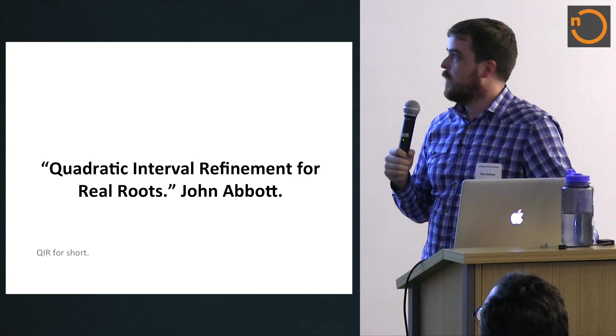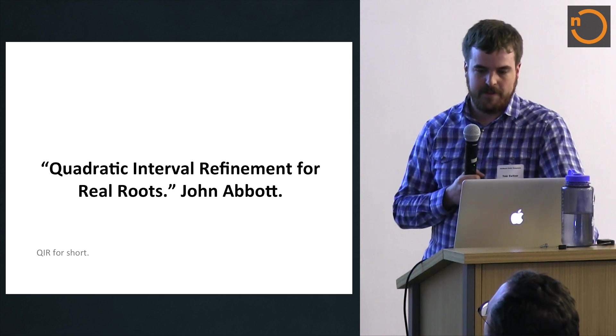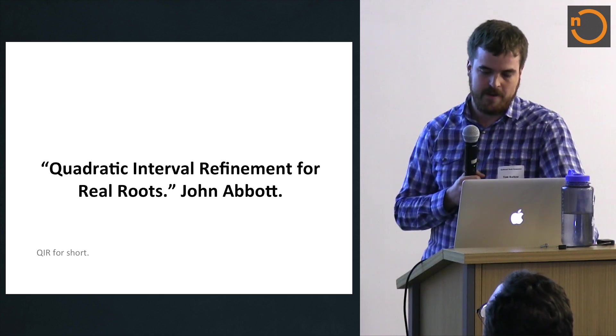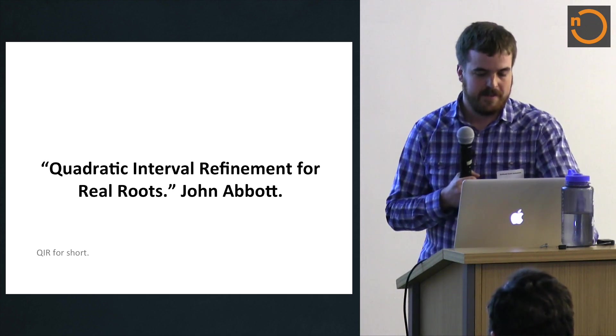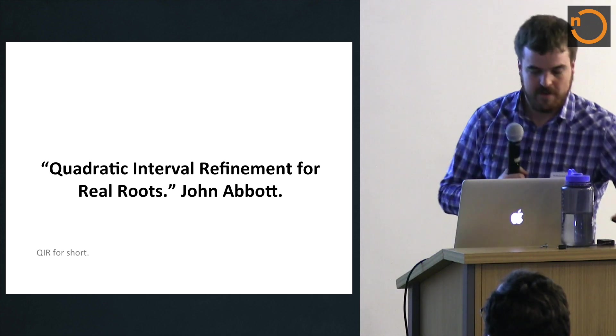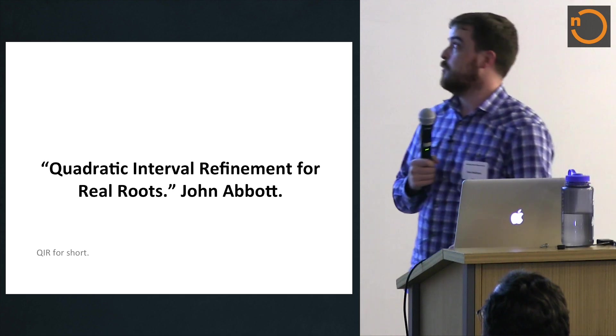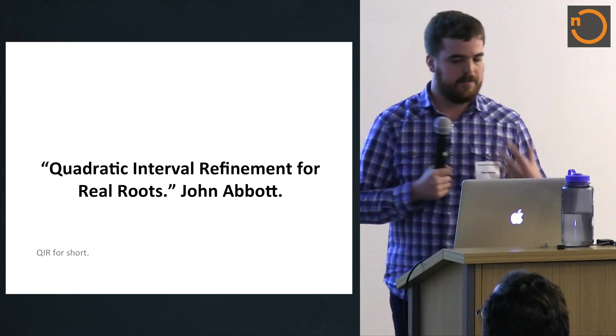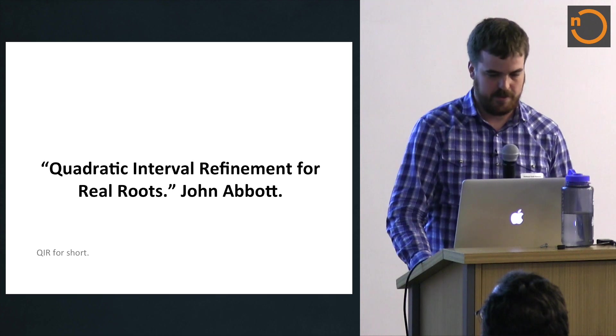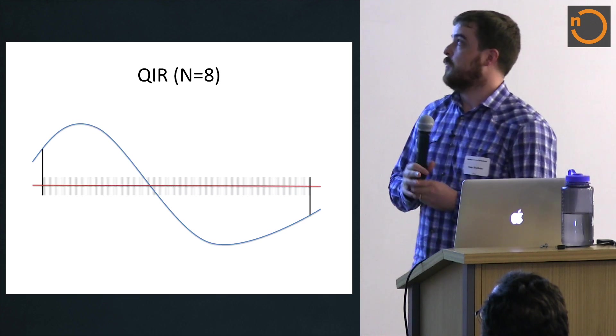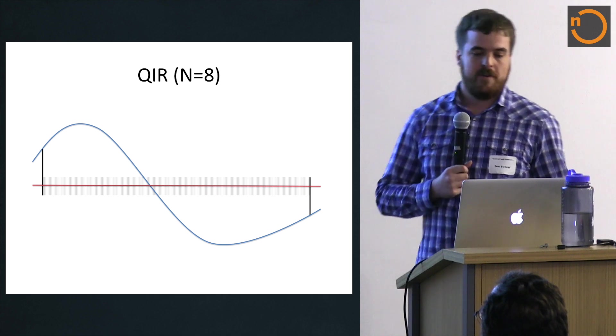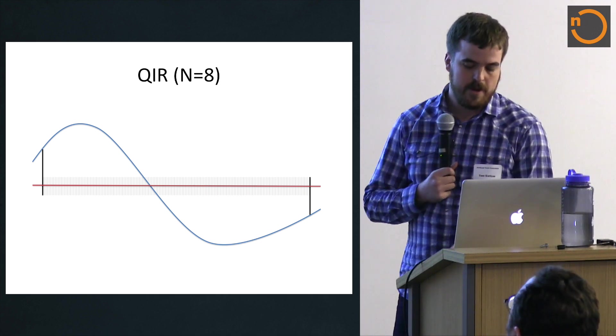And the reason why I bring this up anyways is because I've been implementing polynomial root finding, real roots anyways, in Spire. And basically, as I was implementing this, I was trying to make it fast, obviously. In Spire itself, we've implemented this algorithm called quadratic interval refinement for real roots. So again, this is a pretty easy one to read, and the algorithm itself is pretty straightforward.